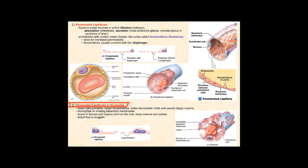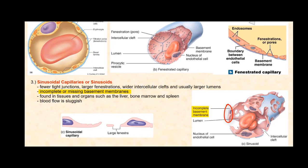The last type of capillaries are the sinusoidal capillaries or sinusoids. We find these in tissues and organs such as the liver, the bone marrow, and the spleen. Compared to continuous and fenestrated capillaries, the sinusoidal capillaries have fewer tight junctions, larger fenestrations, wider intercellular clefts, and usually have a larger sized lumen. The basement membrane is incomplete or missing altogether.